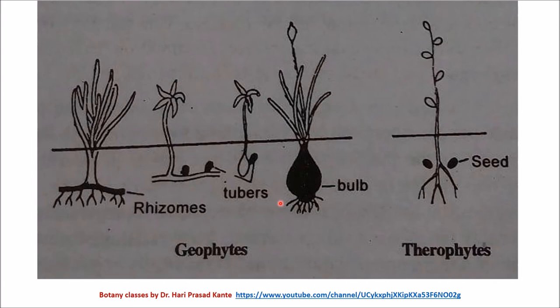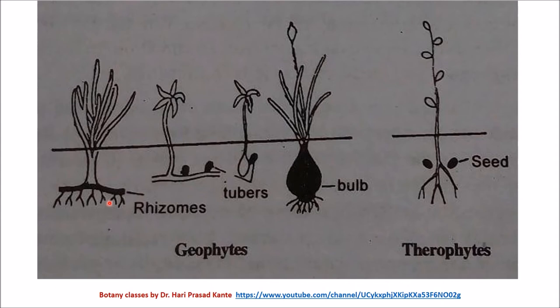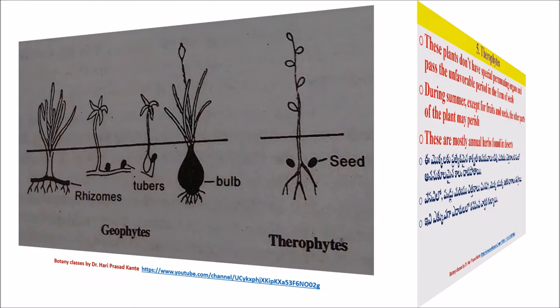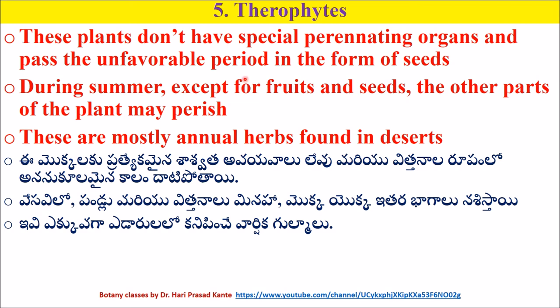Therophytes are plants that don't have any perennating organs like bulbs, tubers, and rhizomes. These plants pass the unfavorable period in the form of seeds. In geophytes, the perennating organs are well protected under the soil. Therophytes don't have any special type of perennating organs and pass the unfavorable period in the form of seeds.